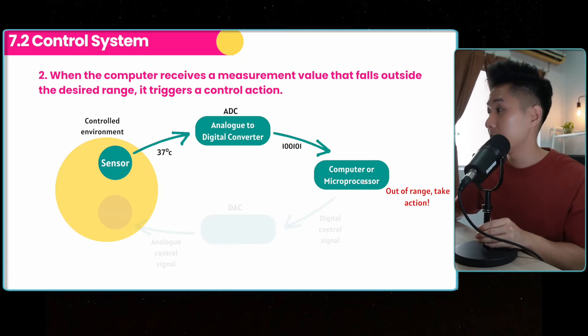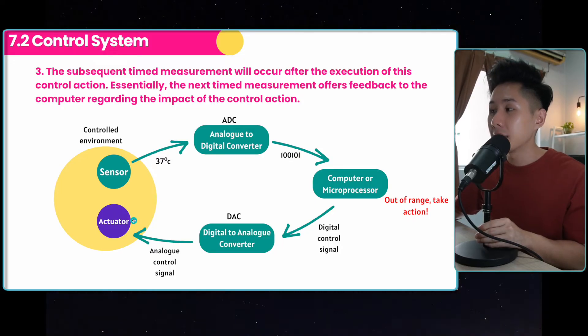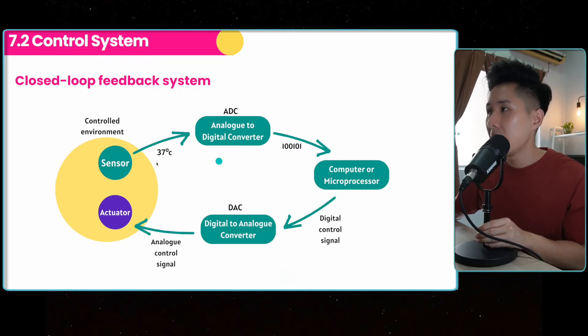So this is the three steps in action. If there's anything that happens out of range, they will send a signal to the actuator to do something. So let's say in this example, it's 37 degrees, it's too hot, then the actuator might turn on the air con. So the subsequent time measurement will occur after the execution of this action. After the actuator does something, the sensor will take in another value, another feedback, to see whether the actuator has solved the problem. Otherwise, it will just instruct the actuator to do a different thing. This entire thing is what we call a closed loop feedback system, because it senses the value, and if anything happened, the actuator does something about it. And then it senses another value to see whether it has solved the problem. And it goes on and on and on and on.